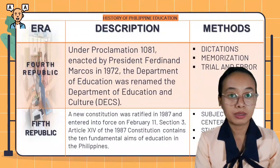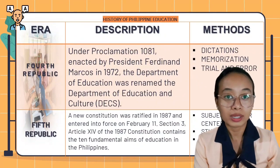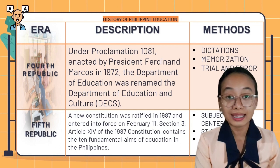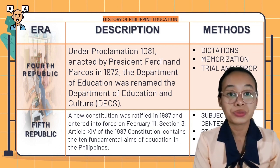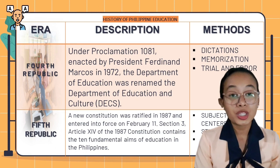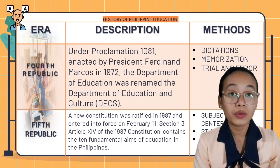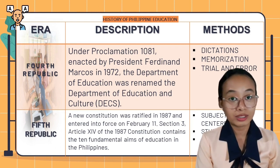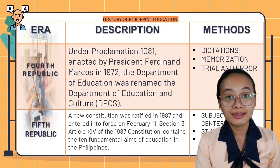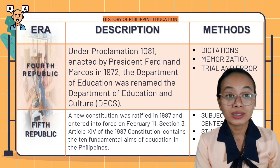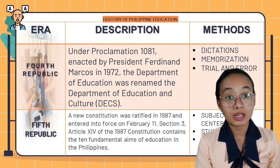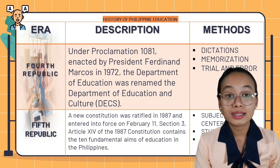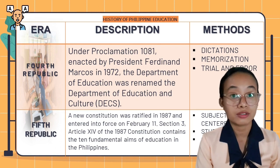During the 4th Republic, under Proclamation 1081 enacted by former President Ferdinand Marcos Sr. in 1972, the Department of Education was renamed to the Department of Education and Culture, also known as the DEC. During the 5th Republic, a new constitution was ratified in 1987 and entered into force on February 11. Section 3, Article 14 of the 1987 constitution contains the 10 fundamental aims of education in the Philippines.